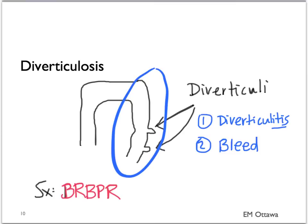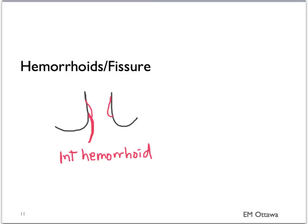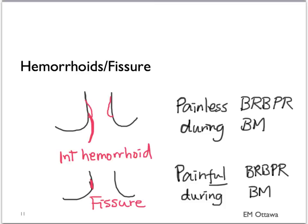The patient with diverticular bleed tends to have no pain. The last causes for lower GI bleed are hemorrhoids and fissures. Internal and external hemorrhoids tend to form with constipation and straining during bowel movements. Internal hemorrhoids can bleed, and patients can present with painless bright red blood per rectum during bowel movement — either in the toilet bowl or when wiping. Fissures occur as a tear in the mucosa. Patients will present with bright red blood per rectum during bowel movement, but the difference from hemorrhoids is that fissures are very painful.